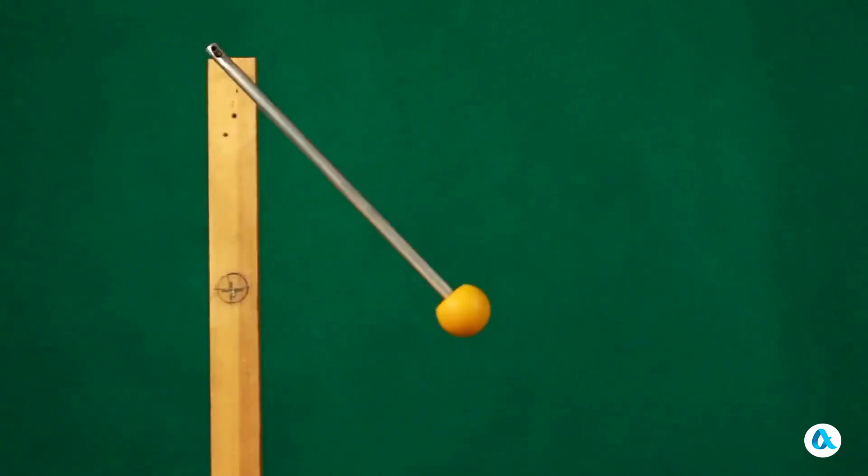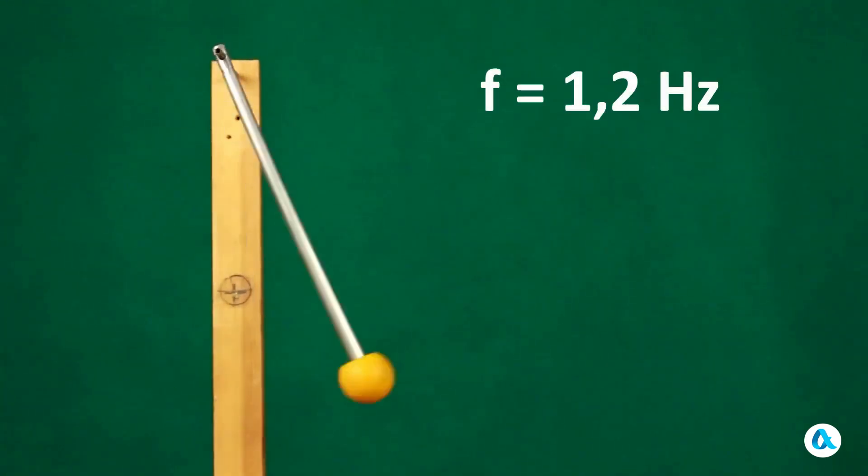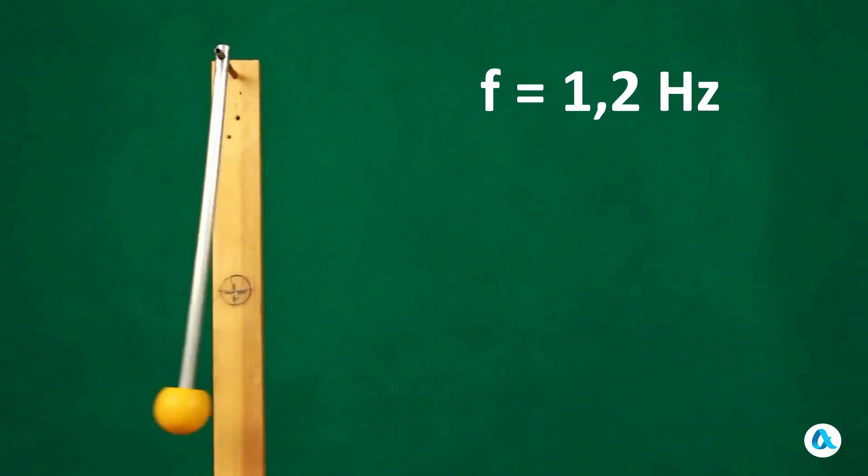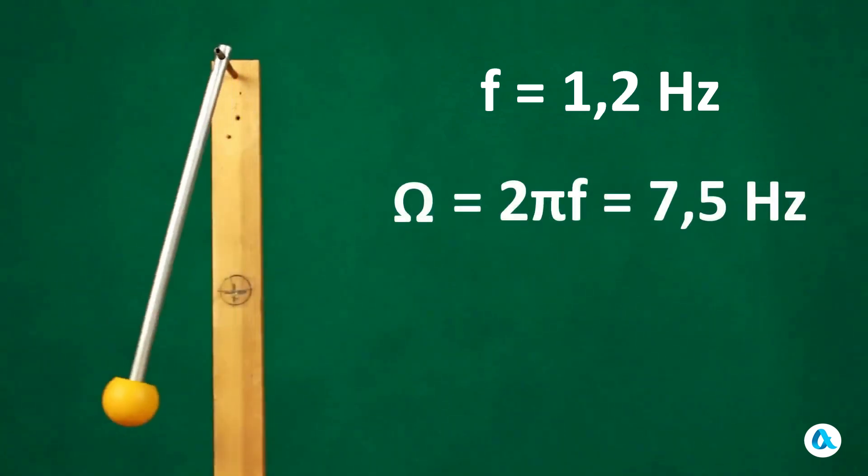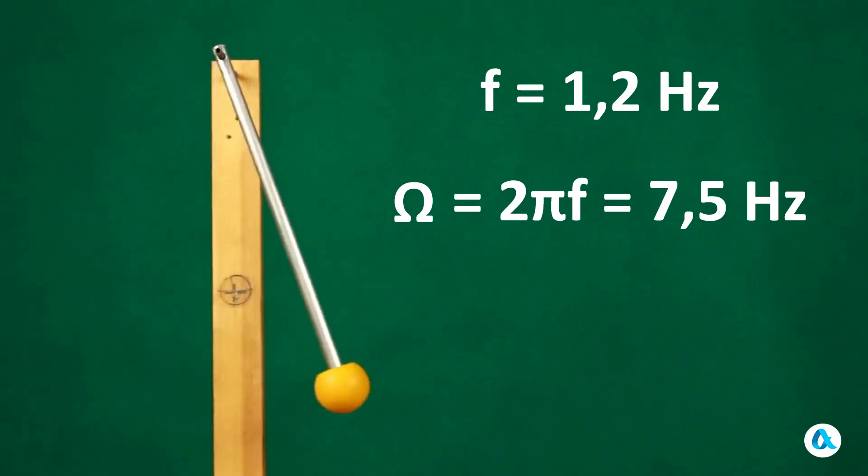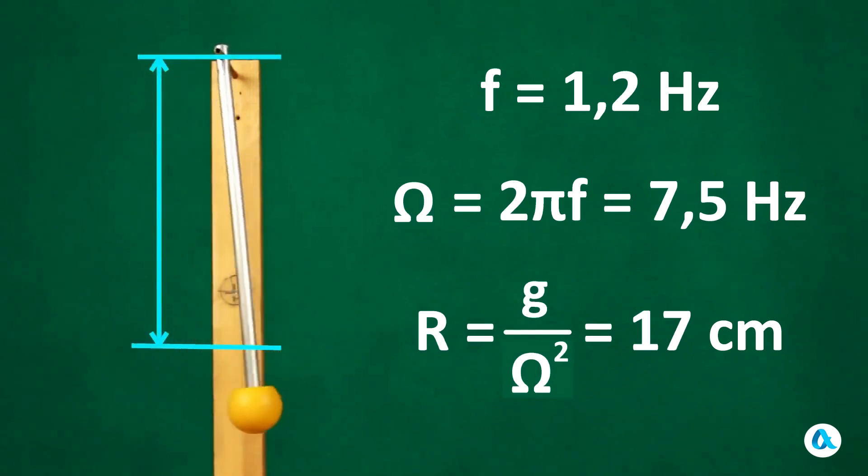I removed the pendulum from the setup, suspended it, swung it, and found the oscillation frequency to be 1.2 hertz. Therefore, the angular frequency, which is 2π times greater, is 7.5 hertz. And the effective length, which is g divided by ω², turned out to be 17 centimeters. Here is this size against the background of the real pendulum.